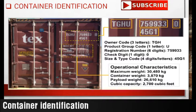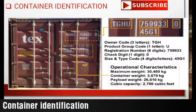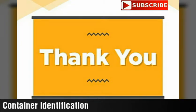If we deduct the container tare weight from the maximum weight, we get the payload weight, which is 26,610 kg. That is the actual cargo weight the container can carry. So to summarize: container tare weight is 3,870 kg, maximum weight is 30,480 kg, and payload weight — the actual cargo capacity — is 26,610 kg.